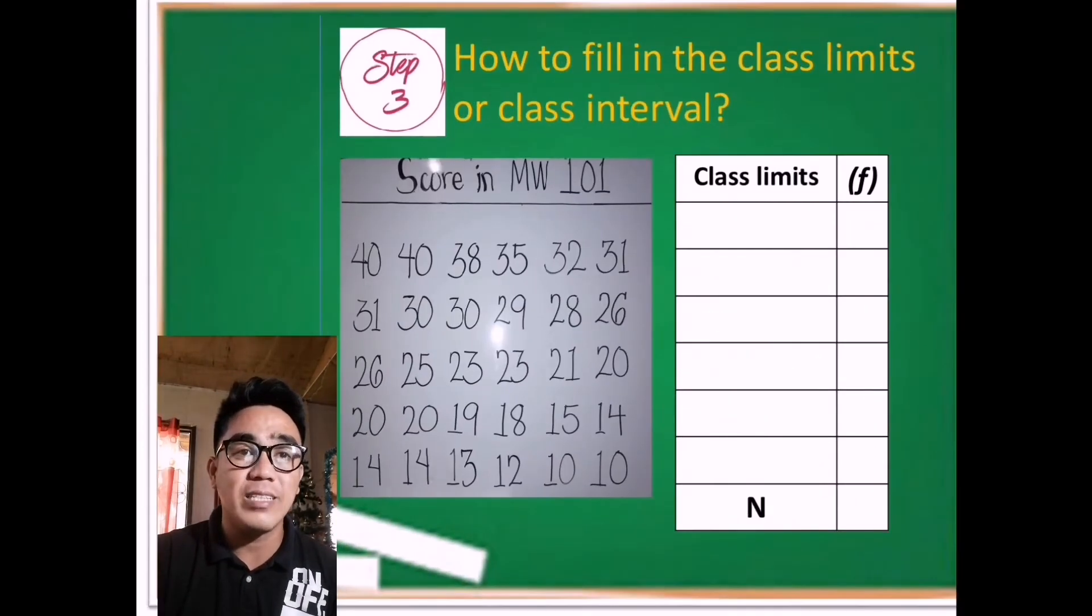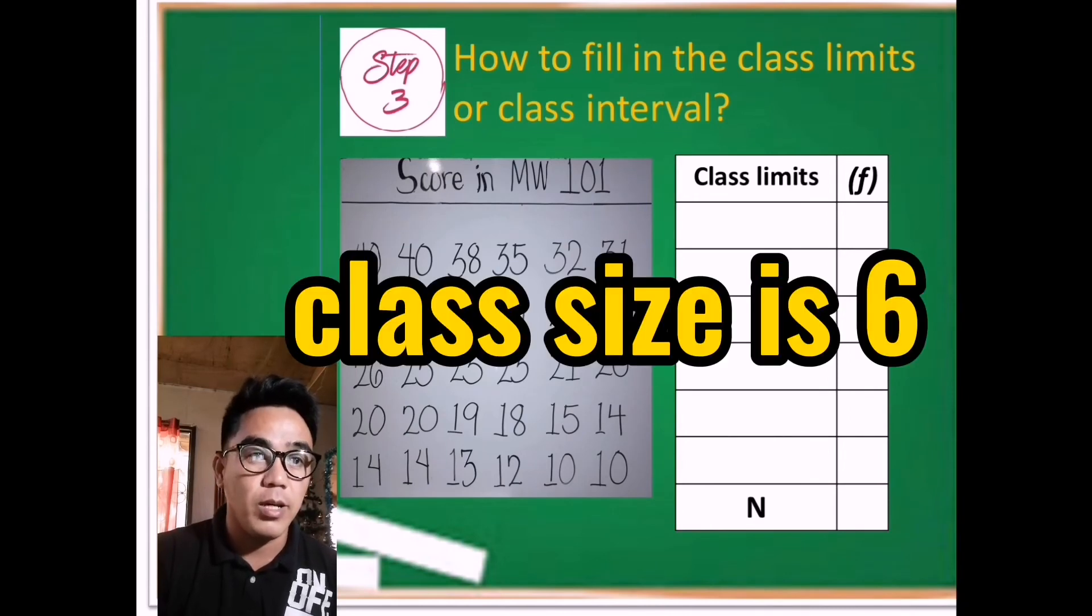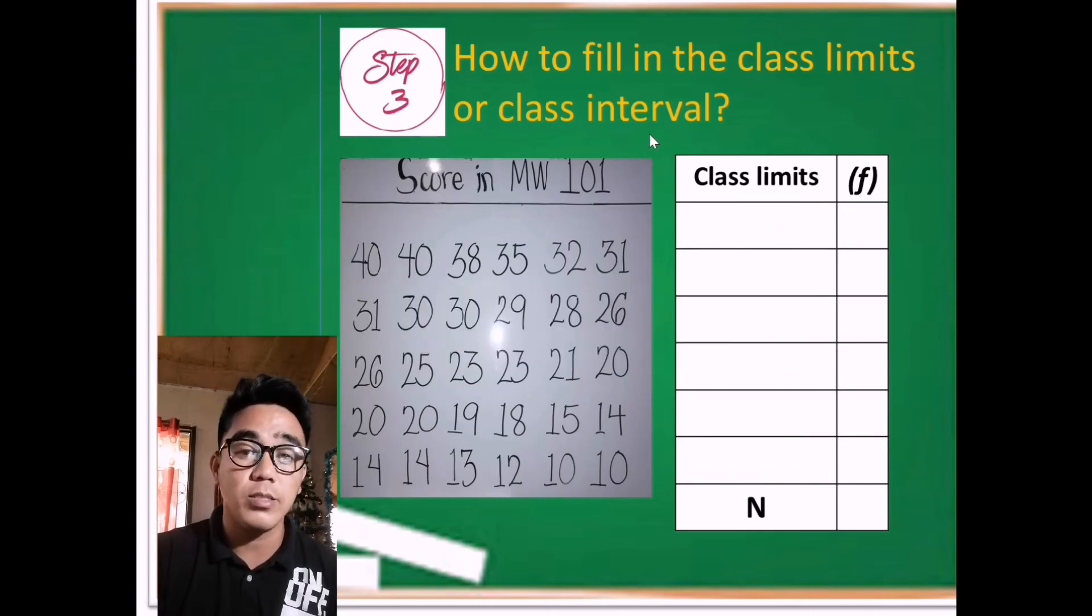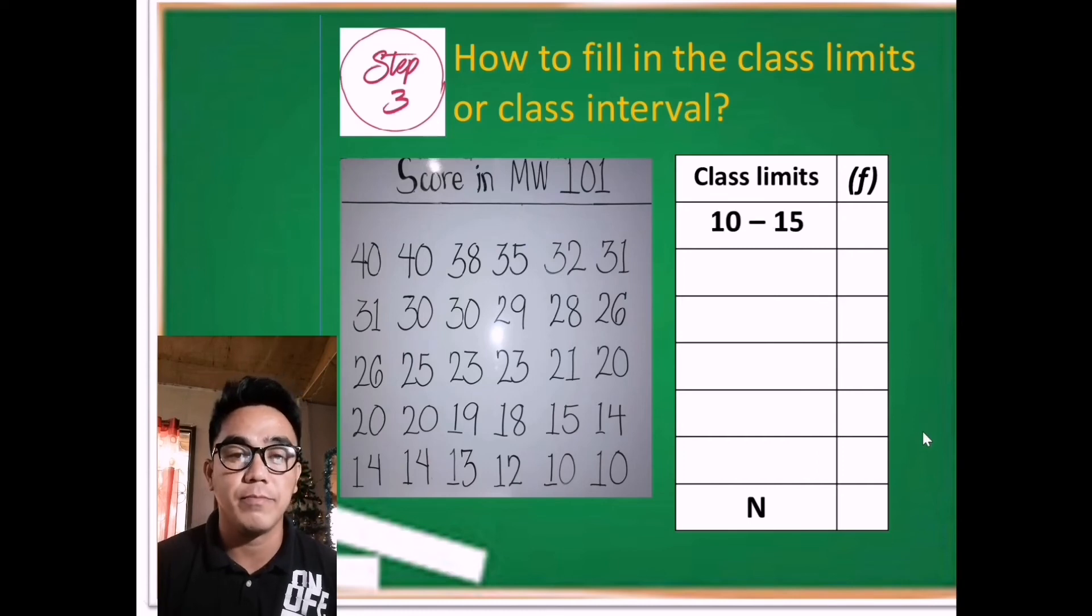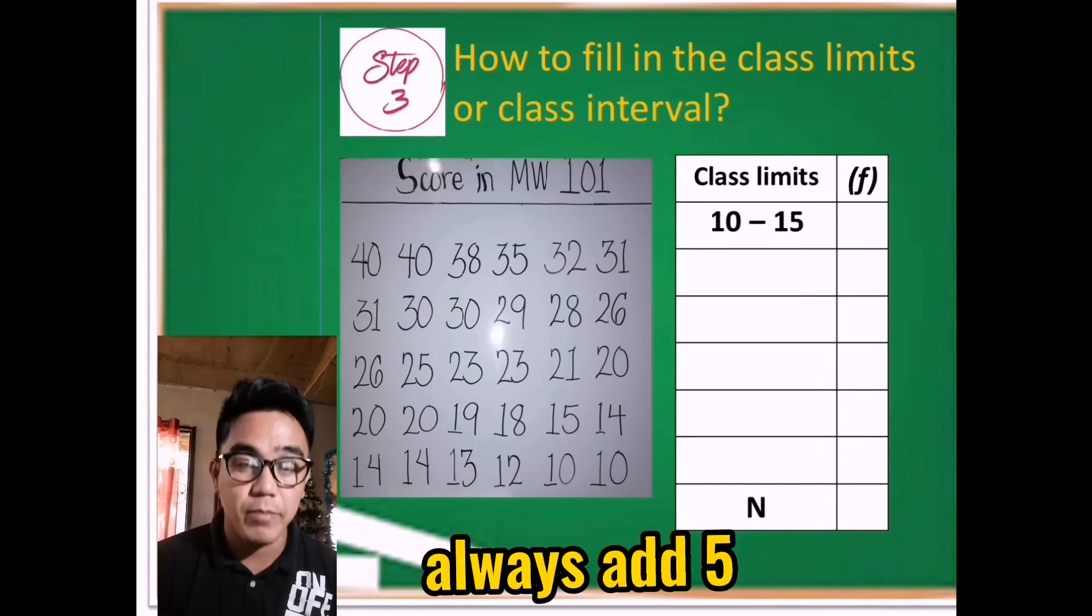Okay, third: how to fill in the class limits or class interval. So remember that the class size is 6. Then we're going to arrange or organize the class frequency distribution from the lowest to the highest value. So in this case, we have 10 as the lowest. Then simply apply the class size, which is 6: 10, 11, 12, 13, 14, 15. So therefore, 10 to 15 would be the first row. Next is after 15 is 16. So if you observe, 15 to 10 or 10 to 15 has a difference of 5. Just add 5: so 16 plus 5 becomes 21.